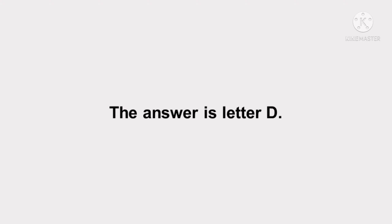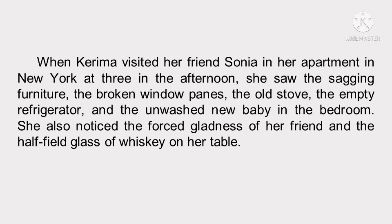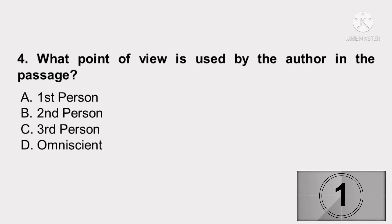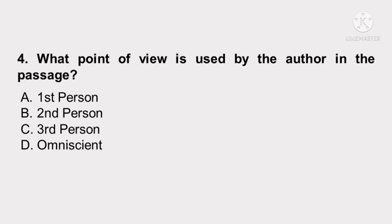Now let us move on to the fourth passage. When Karima visited her friend Sonia in her apartment in New York at 3 in the afternoon, she saw the sagging furniture, the broken windowpanes, the old stove, the empty refrigerator, and the unwashed new baby in the bedroom. She also noticed the forced gladness of her friend and the half-filled glass of whiskey on her table. What point of view is used by the author in the passage? A. First person. B. Second person. C. Third person. Or D. Omniscient. Time's up! What's your answer for number 4? The answer is letter C: third person.